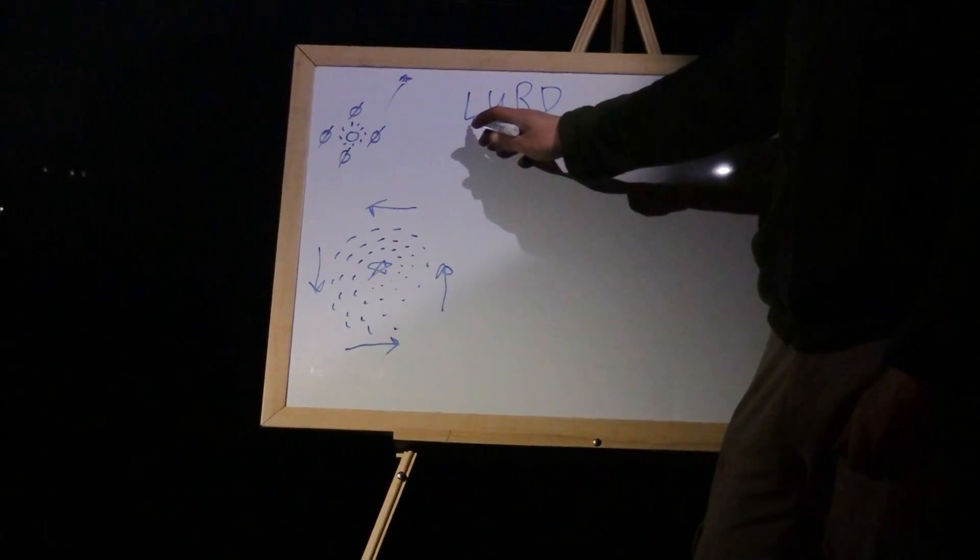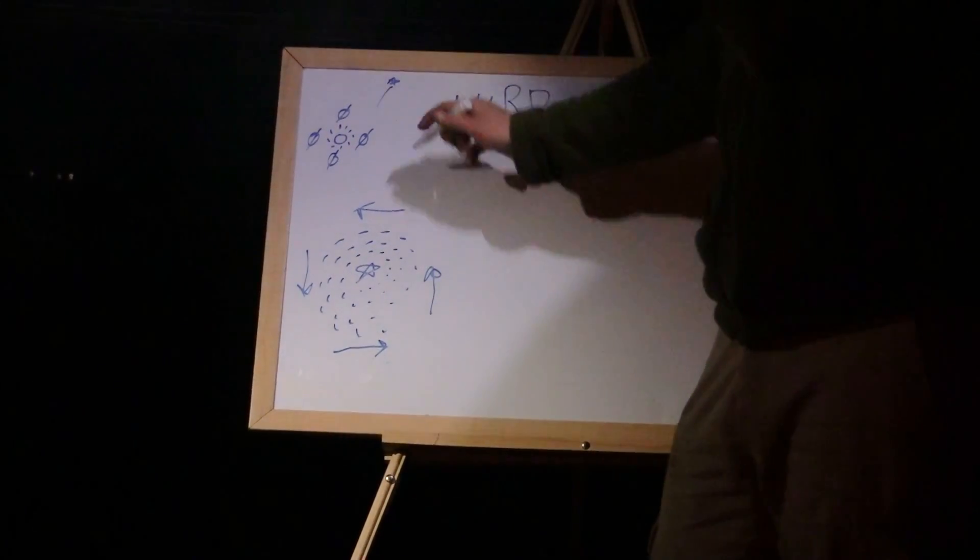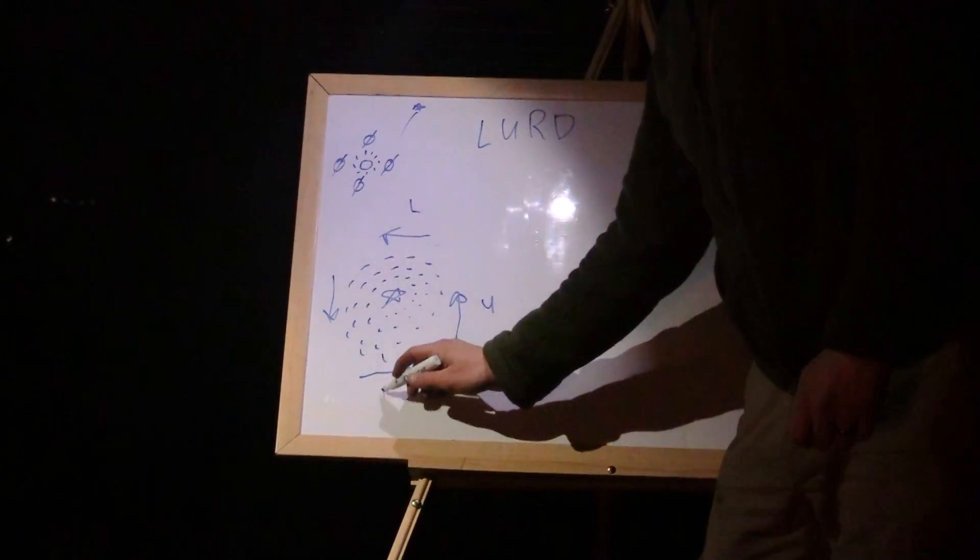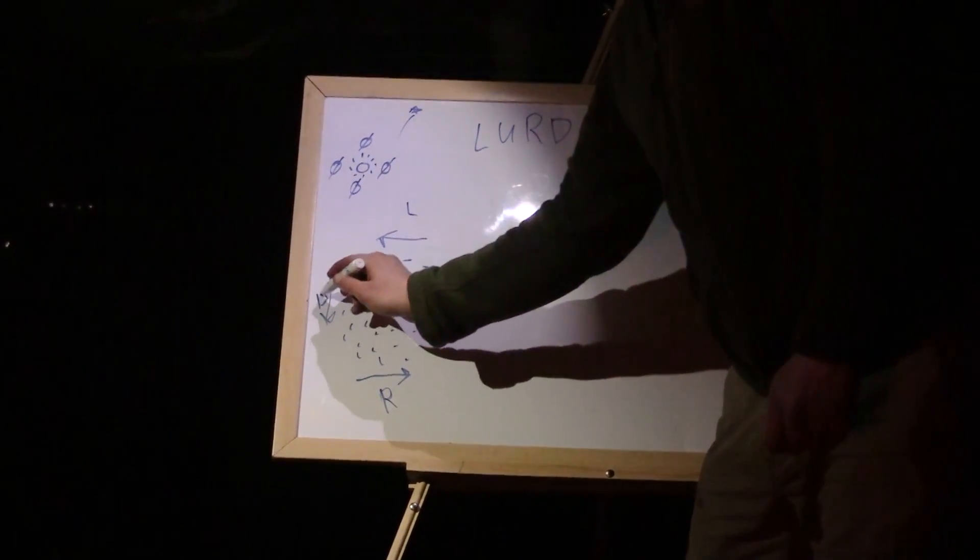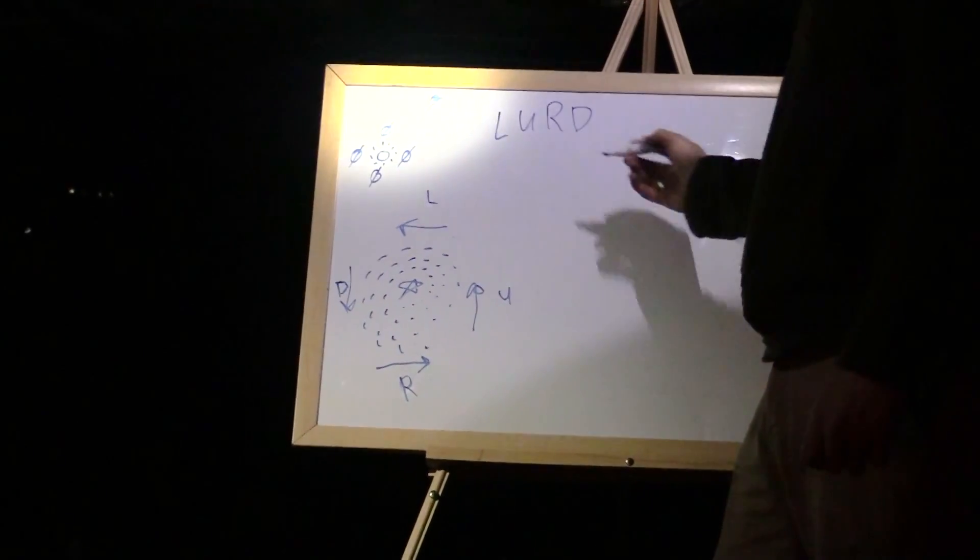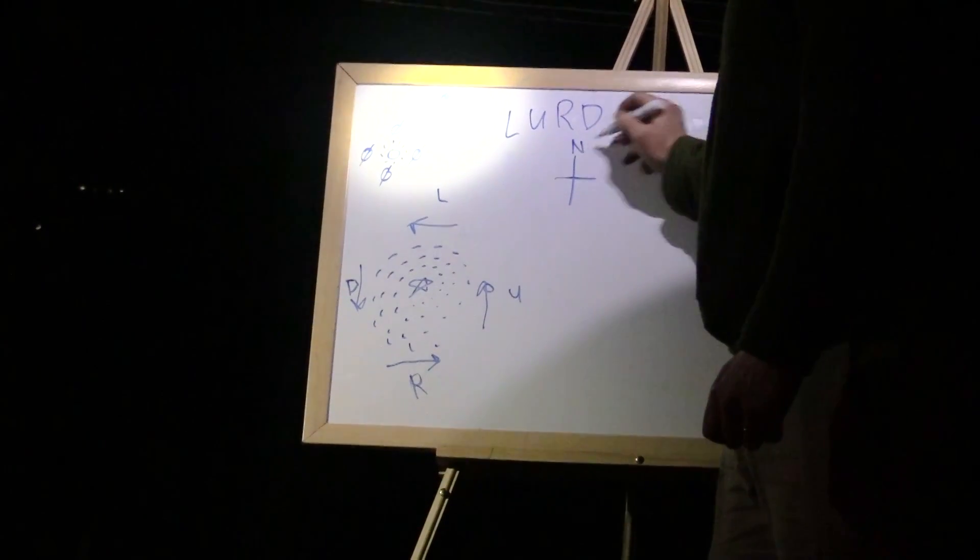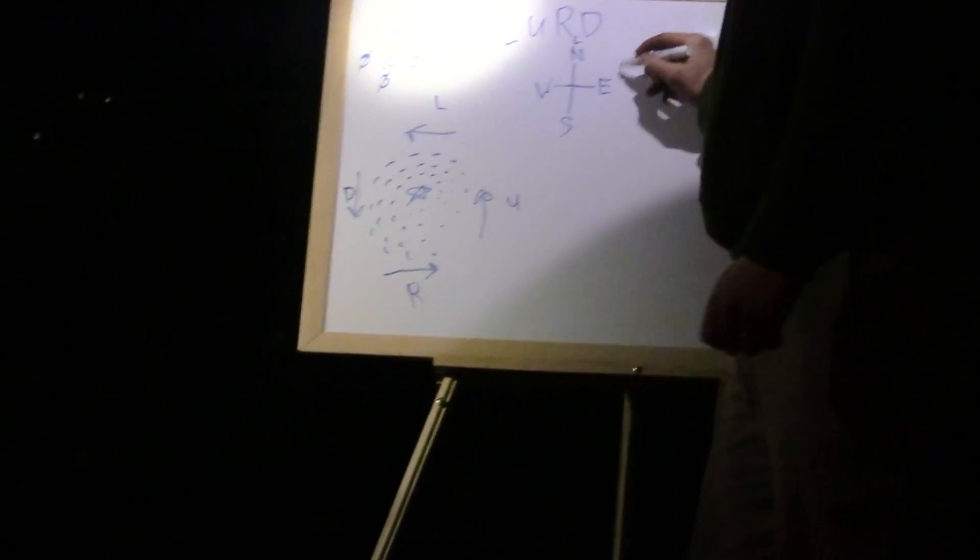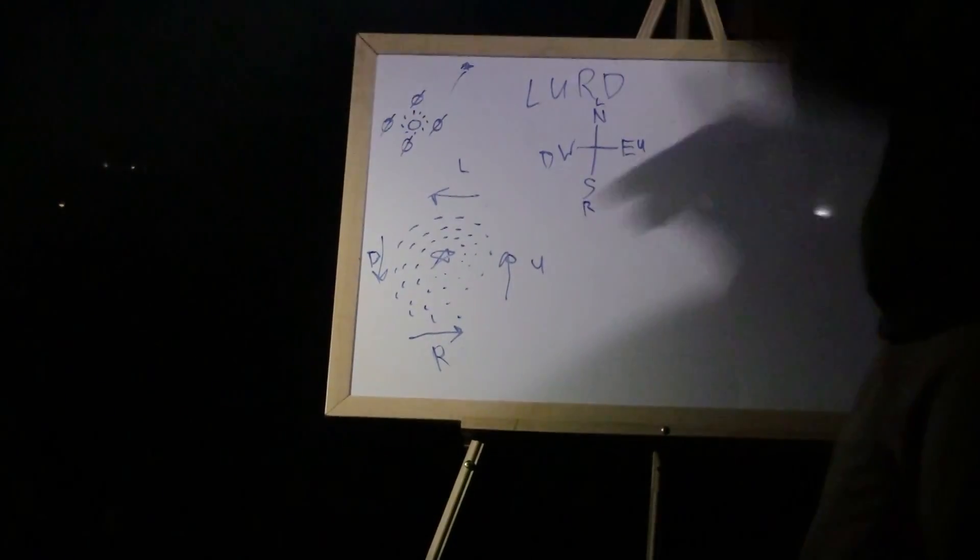LURD. That's left, up, right and down. Now, that is based on this. Left. Up. Right. And down. It goes clockwise. And that also matches North, East, South, West. L, U, R, D. They perfectly line up.